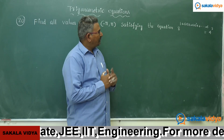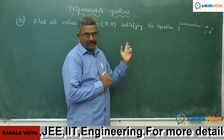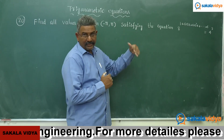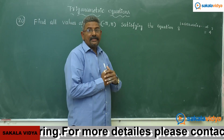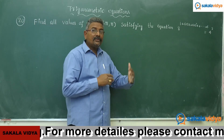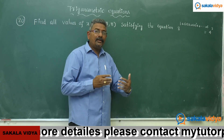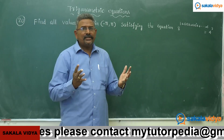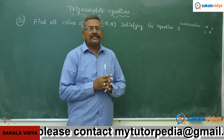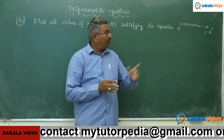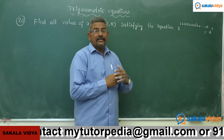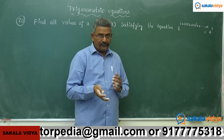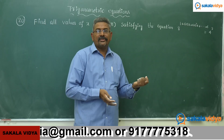Observe that 1 multiplied by cos x gives cos x, and cos x multiplied by cos x gives cos squared x. So this series is in the form a, ar, ar squared and so on — that means it is a geometric progression, specifically an infinite geometric progression.